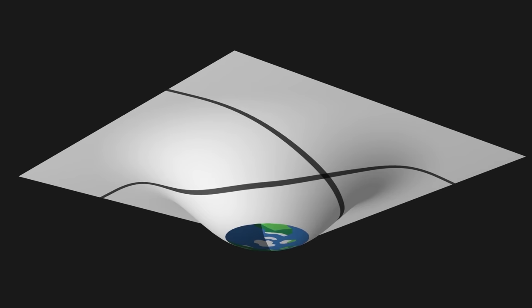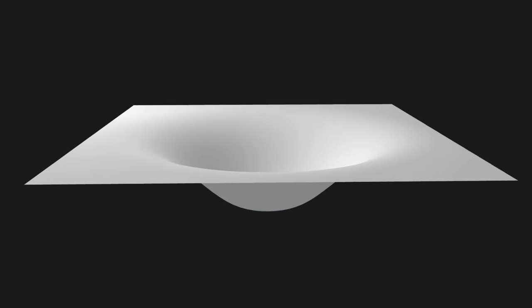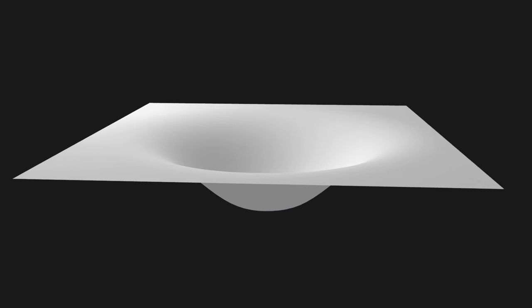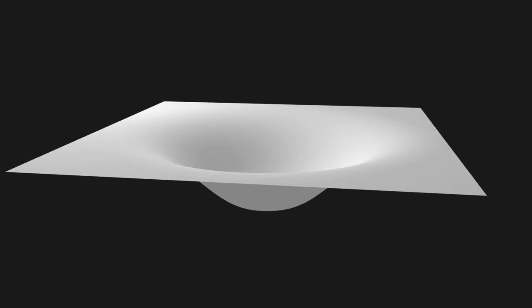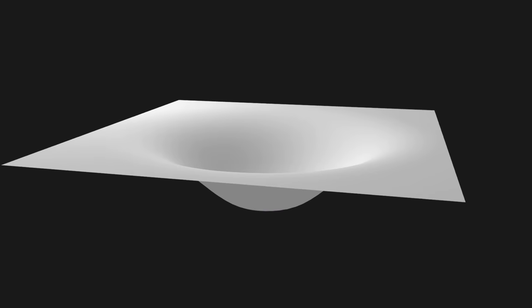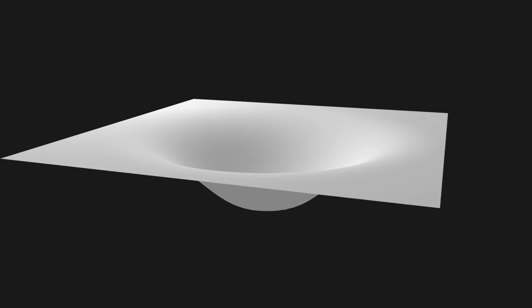However, this picture of an elastic sheet is still misleading. Indeed, one could think that if space-time can bend, it is due to the existence of a higher dimension. Here, for example, the two-dimensional sheet seems to bend into a third dimension.